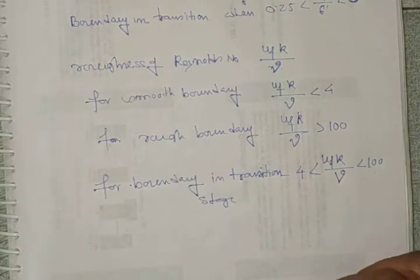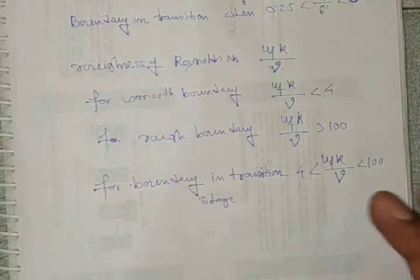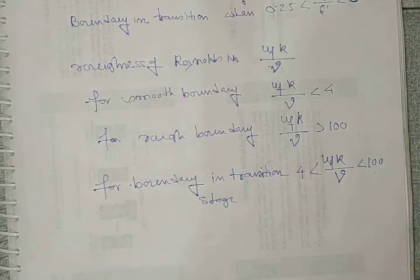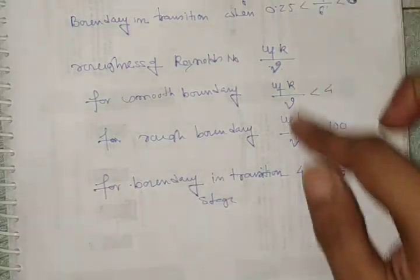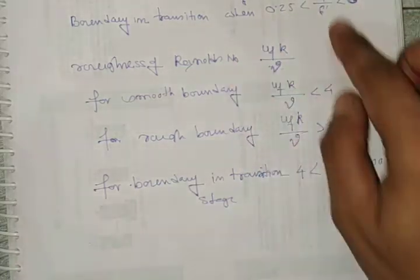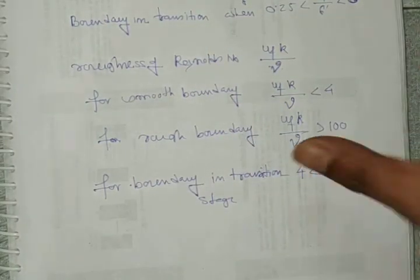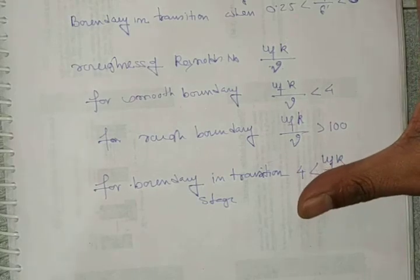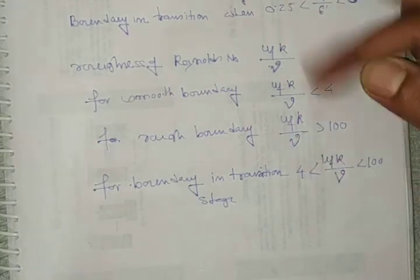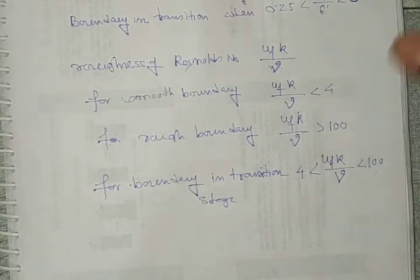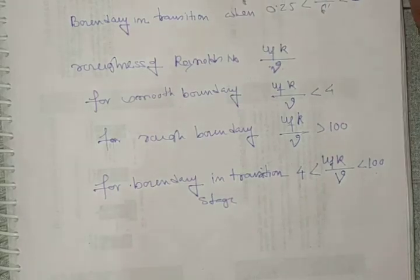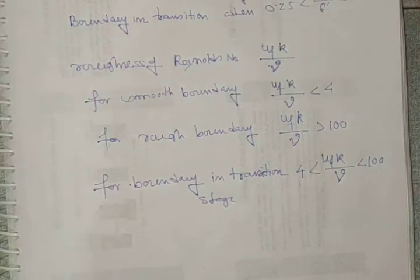I hope you understand the Prandtl universal velocity distribution equation and also those boundary conditions. Regarding the theory, please go through the book and try to understand. Thank you.